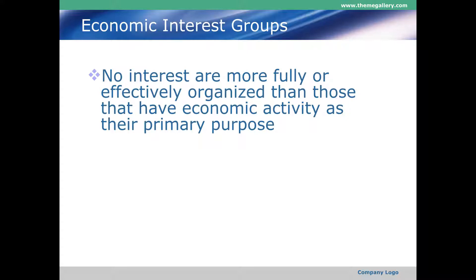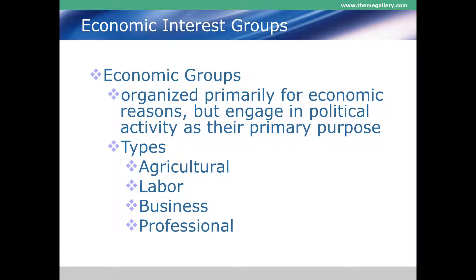Groups have to organize effectively, and those organized on the basis of improving their economic activity are probably the most effectively organized of any group. In order to maintain and further their position in the economy, these interest groups based on economic interests engage in political activity to seek favorable policies from the government. This relates back to the iron triangle — their interaction with both the executive branch through agencies and the legislative branch through congressional committees.